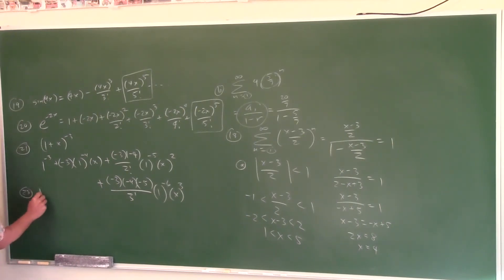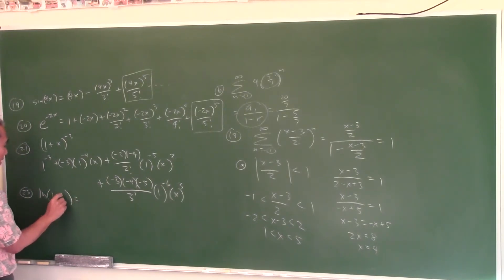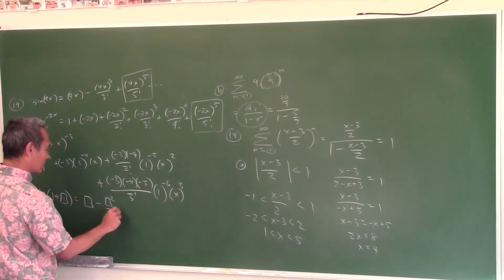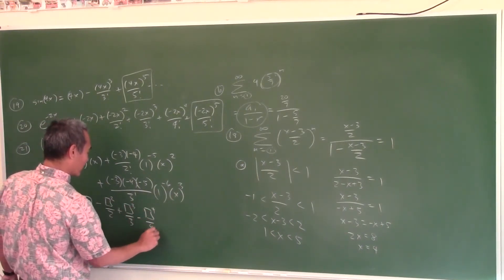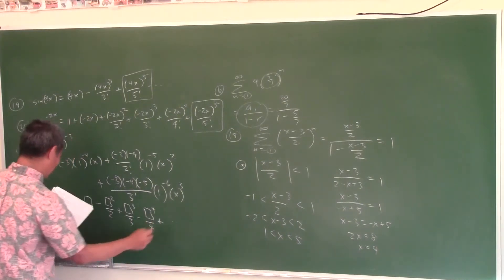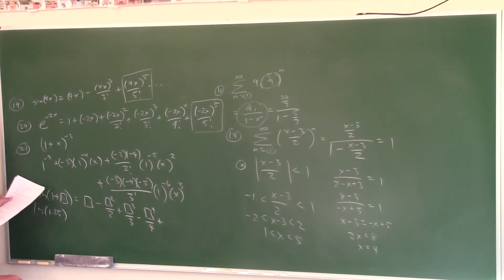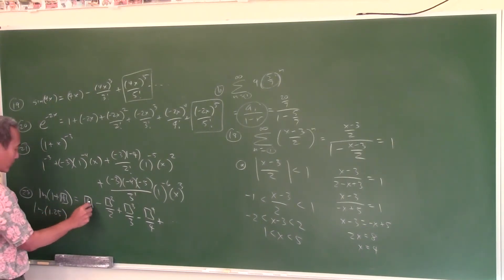Using the power series ln(1+x) = x minus x²/2 plus x³/3 minus x⁴/4 and so forth, find the least number of terms needed to approximate ln(1.25) so the magnitude of error is less than 10^(−3), which is 1/1000. To get 1.25, plug x = 1/4 into the box. We're looking for the first term that is less than 1/1000.